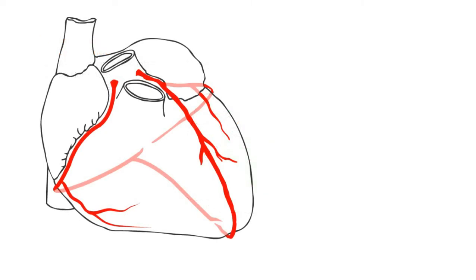Some of you might be wondering why these arteries are called the coronary arteries. The word corona means crown. As you can see in this picture, the total shape of the arteries looks like a crown — this is the reason why they are called the coronary arteries.